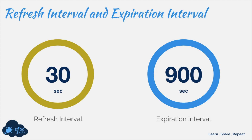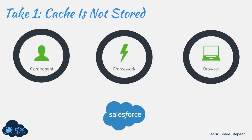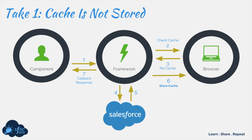Now what happens between the refresh interval and the expiration interval? Let's look at the scenarios. In the first scenario, if the cache is not stored in your browser, your component requests data, the framework goes to the browser, the browser says it doesn't have the data, so the framework goes to Salesforce, makes a call, gets the response, stores the data in the browser cache, and then provides a callback to your component where the data is rendered on the UI.